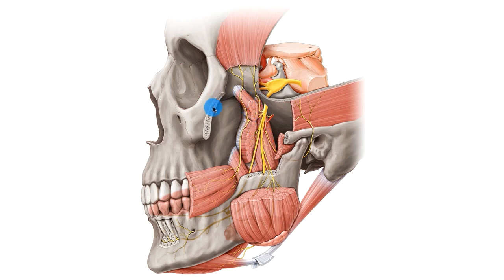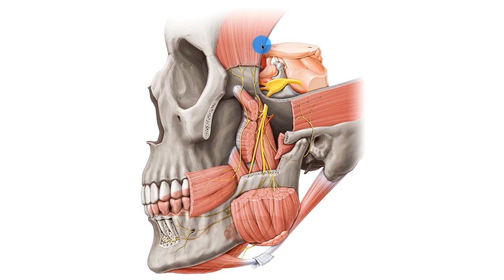Notice that the skull is cut here on the zygomatic bone and also here on the mandible, so we can also see another cut here done mainly on the parietal bone that exposes this structure here.